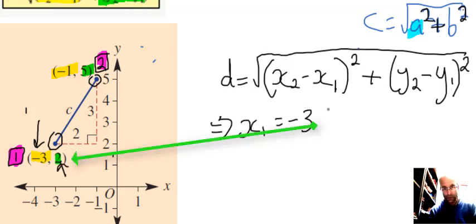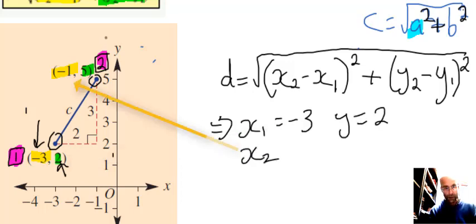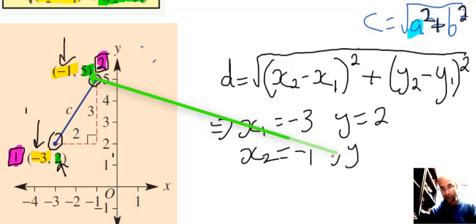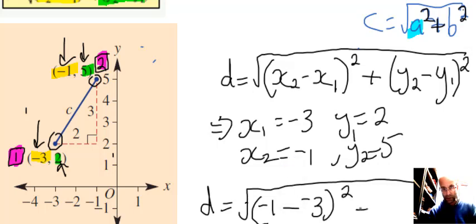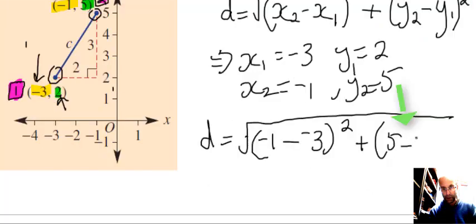y1 is 2, so write that down. And x of point 2 is up here negative 1, and we've got y of point 2, y of point 2 is that one there, 5, you can see in green. Be clear on that and then once you've worked that out you can substitute it in.